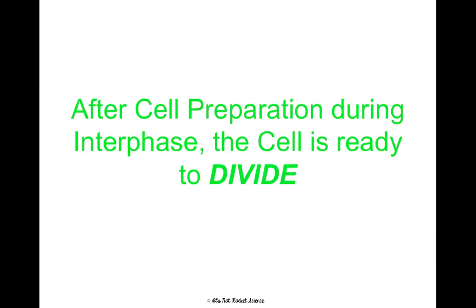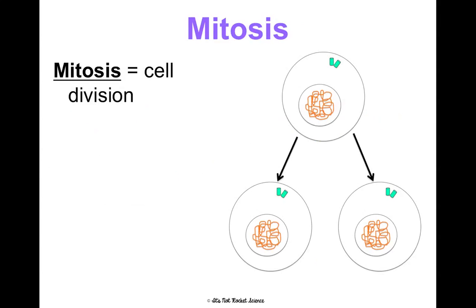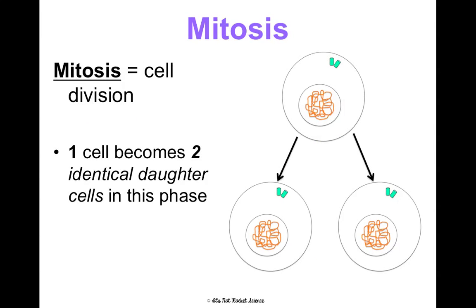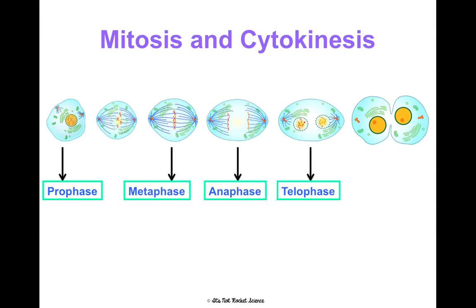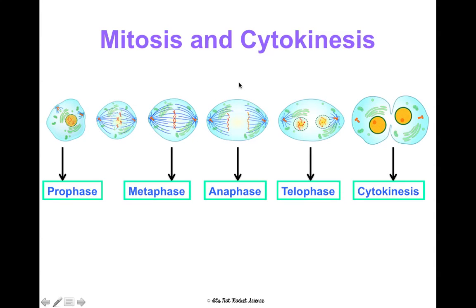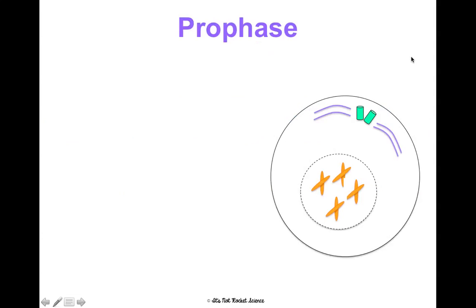After the cell has been prepared to divide in interphase, it's ready for the division part — that's mitosis, where one cell becomes two identical daughter cells. We go through prophase, metaphase, anaphase, telophase, and cytokinesis. There's also prometaphase, which some include as a separate step — it's an intermediate between prophase and metaphase — but we won't go through it separately. So, prophase: chromosomes condense and become visible as sister chromatids — they look like X's rather than thread-like chromatin.